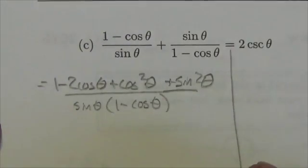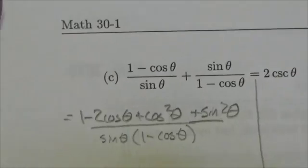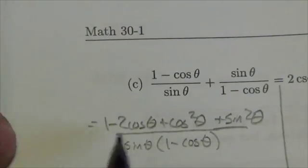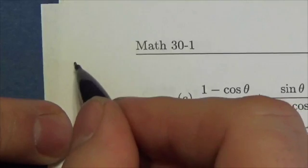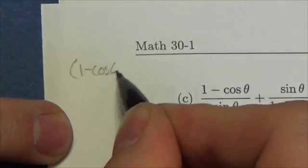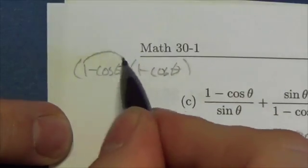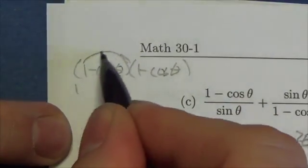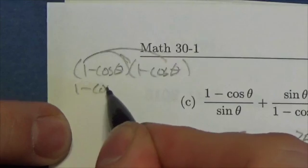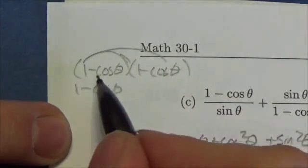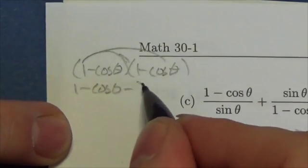Now, I feel somewhat obliged to go through and explain where that 2 cos theta came from, because odds are pretty good not everyone's going to see that. It's 1 minus cos theta times 1 minus cos theta. 1 times 1 is 1. 1 times negative cos is negative cos theta. Negative cos theta times 1 is negative cos theta,